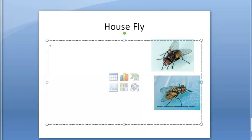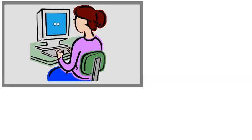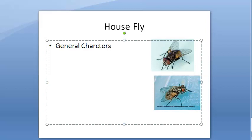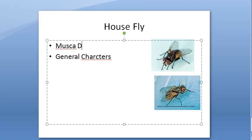Let's look at the house fly. It is a very familiar, common insect which lives very close to man, so they occur in abundance. They don't bite, and if they are present, it indicates some insanitation nearby. A very common and important member is Musca domestica.